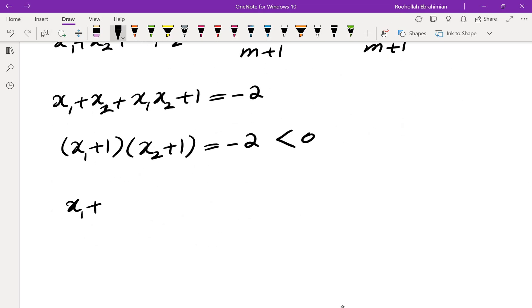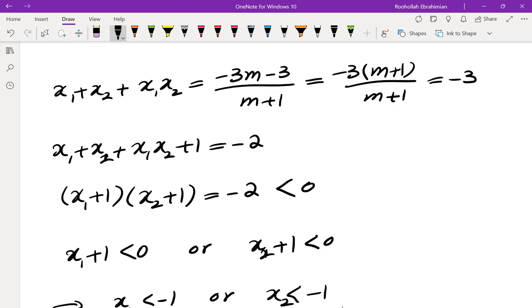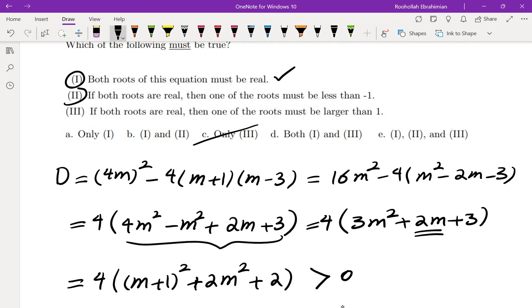Okay what does that mean? That tells us x₁ < -1 or x₂ < -1. And it also tells us that the other one must be more than negative 1. So that in fact matches the second one. If both roots are real then one of the roots must be less than negative 1.